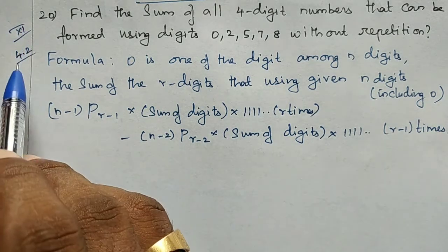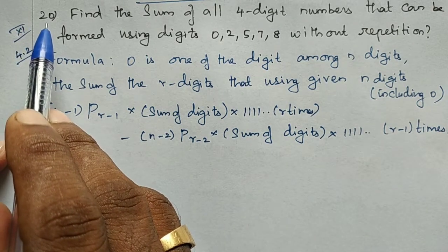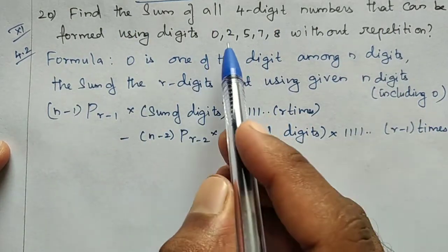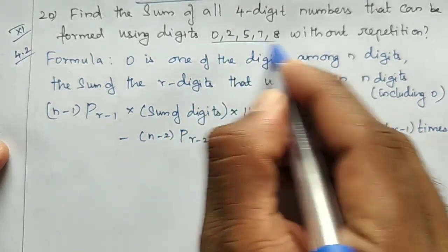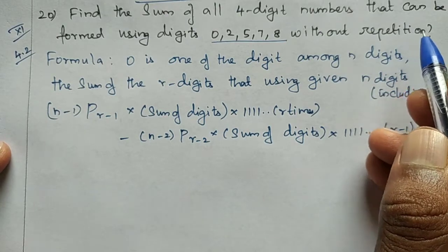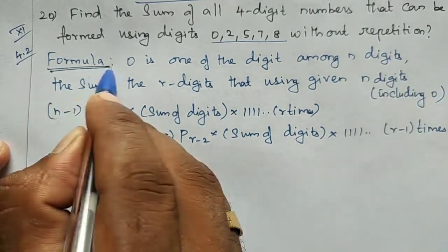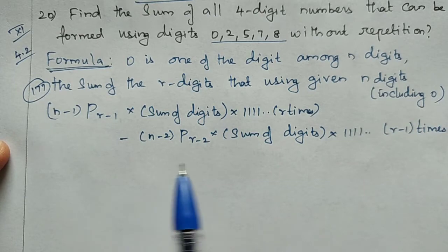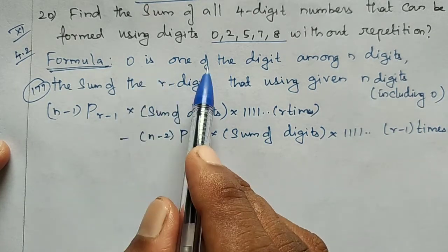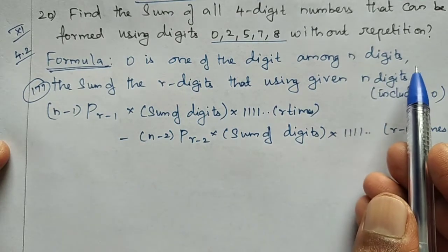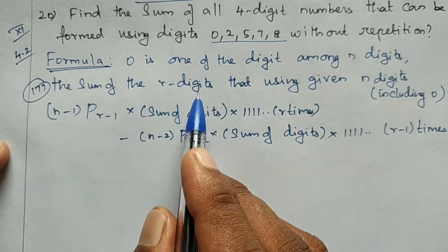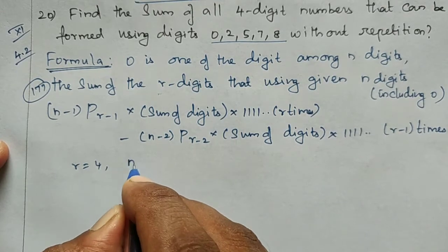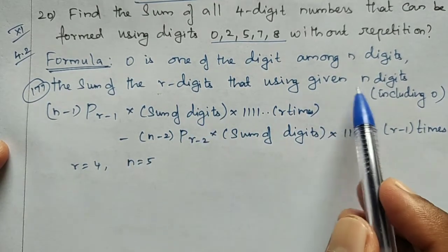Hi students, 11th standard, Exercise 4, question number 20 — the last question in this exercise. Find the sum of all four-digit numbers that can be formed using the digits 0, 2, 5, 7, 8. Here, n is equal to 5 (including 0), and r is equal to 4.